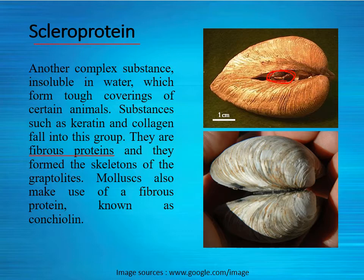So, hard parts are made up of these different kinds of minerals or complex proteins in different groups of organisms. As shown in the previous slide, many bivalves have their hard parts composed of aragonite, and along with this aragonite they also bear the complex protein scleroprotein. So one organism can have more than one type of hard part material.